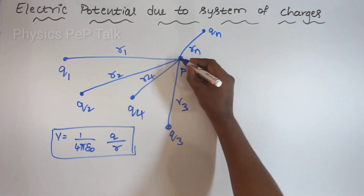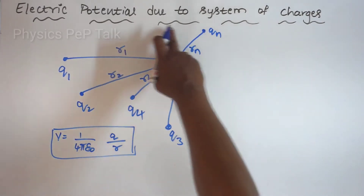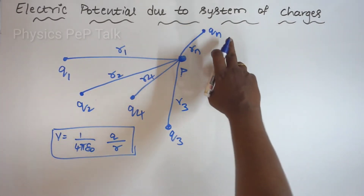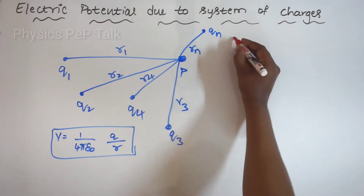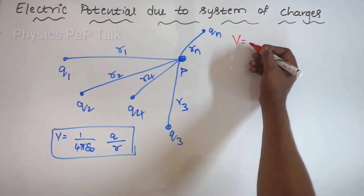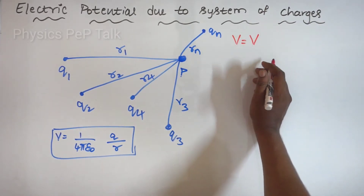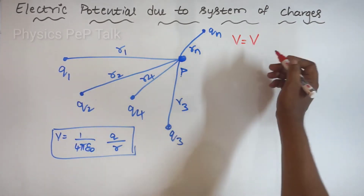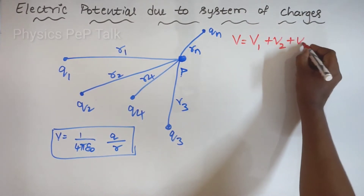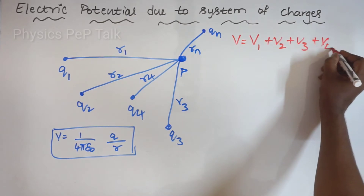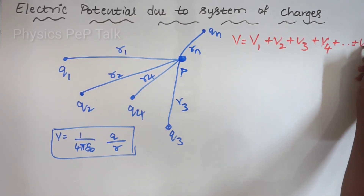Now, what is the total electric potential at point P due to the presence of all these charges up to Qn? That will be equal to the algebraic sum of the electric potential due to Q1, Q2, Q3, and so on and so forth. That is V1 plus V2 plus V3 plus V4, so on and so forth, up to Vn.